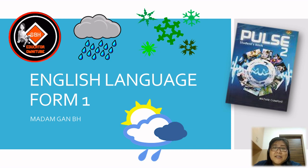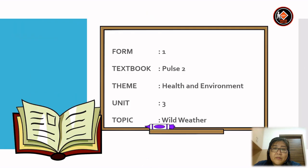Welcome to another lesson for English language. This is a lesson for Form 1 and we are using the textbook Pulse 2. The topic is on health and environment. Today we are going to learn Unit 3. The topic is Wild Weather.